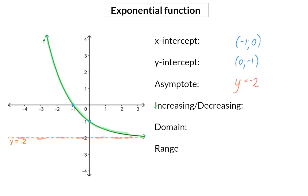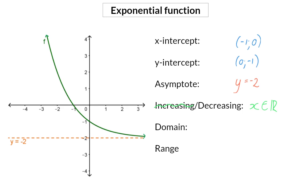For the domain, we determine what x-values will form part of this graph by reading from left to right, and in this case, all x-values are part of an exponential function. For the range, we determine the y-values by reading from left to right, and you will see that this graph only lies above its asymptote, and that means for all y-values bigger than that asymptote of minus 2.